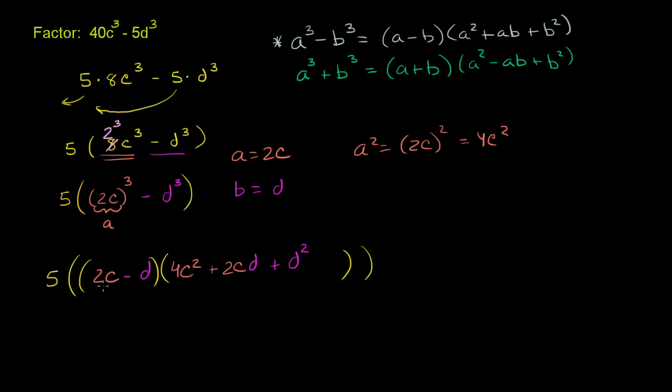And you're done. We have factored it out. And actually, you could get rid of one set of parentheses. This can be factored as 5 times 2c minus d times 4c squared plus 2cd plus d squared. And we are done.